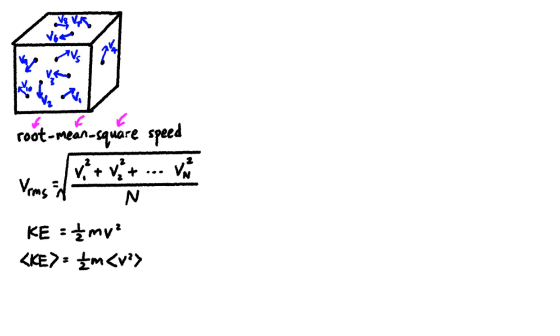Because KE is half mv square, the average KE of the gas particles is given by half m times the average of the v square. Not v cube, v4, v5 or whatever. This term here by the way is called the mean square speed.